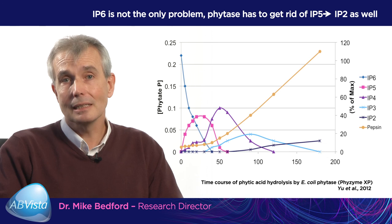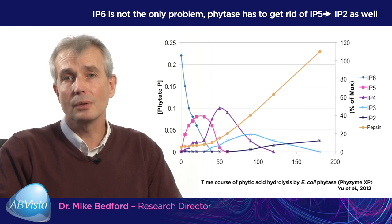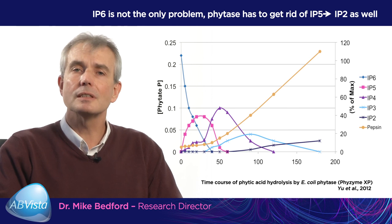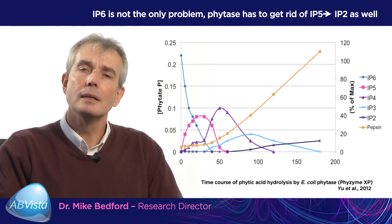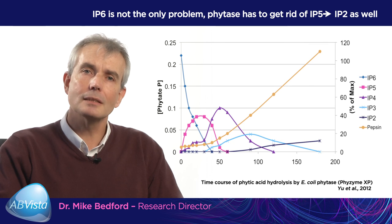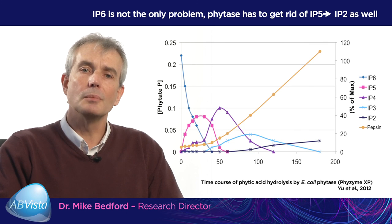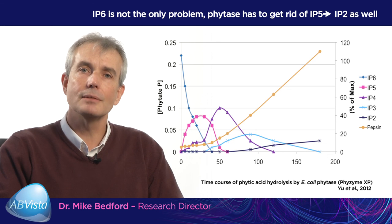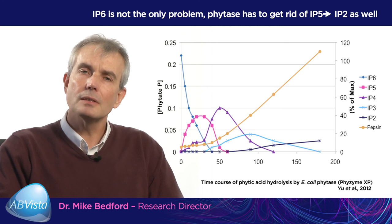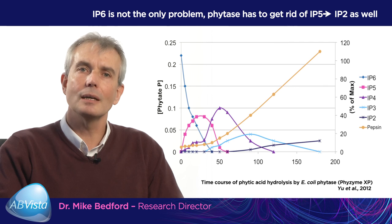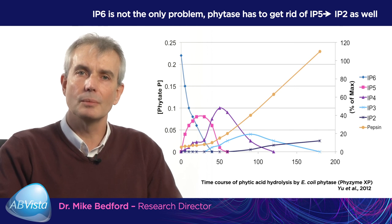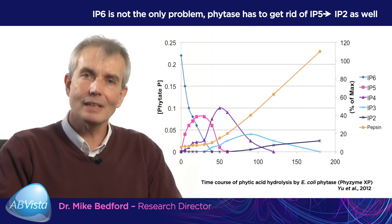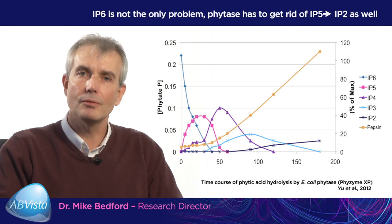IP5 is clearly present at high concentrations and being broken down rapidly, but even when the IP5 has disappeared at around 60 minutes, the activity of pepsin is still only 20% of maximum. IP4 is completely removed at about 120 minutes and still the pepsin is only 70% active. It's not in fact until IP3 has disappeared that you see full activity of the pepsin. This is the first piece of in vitro work suggesting that we should not just think of IP6 as the only anti-nutrient — we've got to start thinking about IP5, IP4 and IP3.